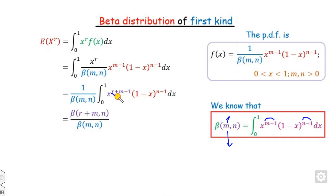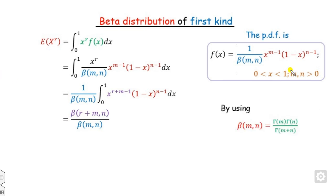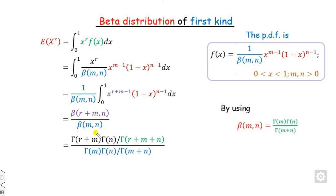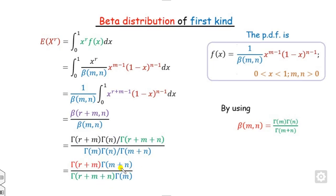We expand this beta function using the relation beta(m, n) = gamma(m) * gamma(n) / gamma(m+n). In the numerator we have gamma(r+m) * gamma(n), divided by gamma(r+m+n), all divided by the original beta(m,n). The gamma(n) terms cancel out, and after simplification we get a clean expression for E[X^r].